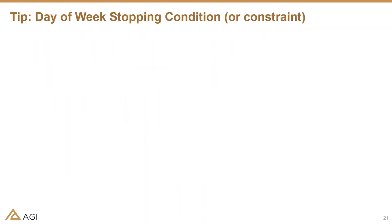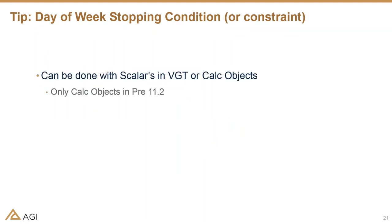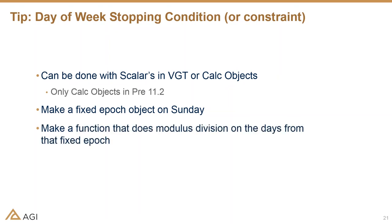The next tip is a day-of-the-week stopping condition or constraint. This can be done with scalars in the Vector Geometry Tool or Analysis Workbench, or with calculation objects — though prior to version 11.2, it can only be done with calc objects in Astrogator. You make a fixed epoch object on Sunday or whatever your zero day is, then make a second scalar calc object or VGT object that does modulus division on the days from that fixed epoch, giving you 0 through 6 for the day of the week. For example, to stop at the first perigee on a Tuesday, use it as a stopping condition constraint where it must equal two.